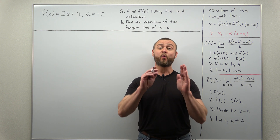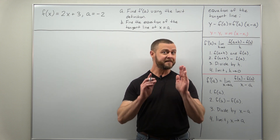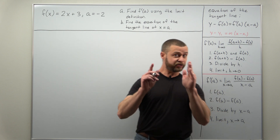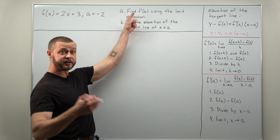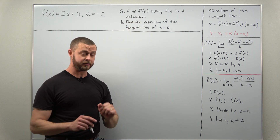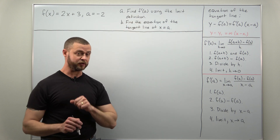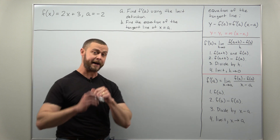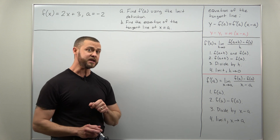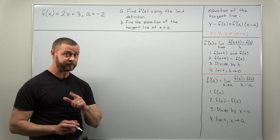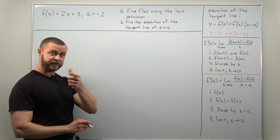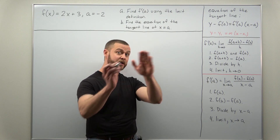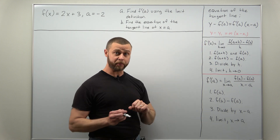Greetings fellow mathematicians! We're going to take a look at the problem of finding a derivative by using the limit definition. This is usually a two-part question. Part A is finding f prime of A, the slope of the tangent line, using the limit definition, and we'll go through applying both equivalent versions of that. Part B is taking your slope from part A and finding the equation of the tangent line, which is really simple — basically just plugging the slope and the y-coordinate into point slope form.